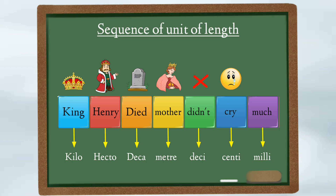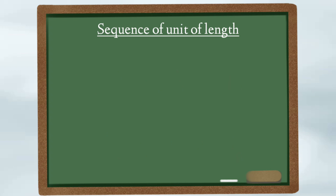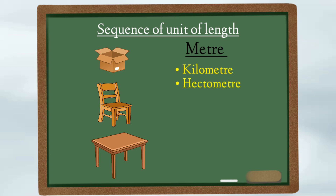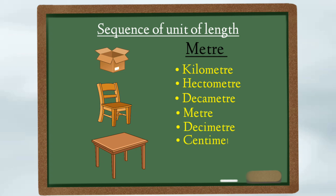Suppose if you want to measure the length of any object such as a box, chair, or table, we will use the unit meter. Therefore we will use: kilometer, hectometer, decameter, meter, decimeter, centimeter, and lastly millimeter.